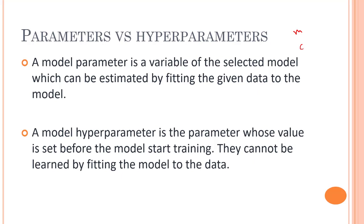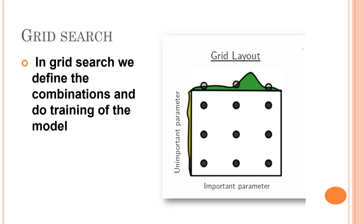Let's look into the different ways we can tune our hyperparameters. The first way is grid search. Grid search is one of the simplest algorithms for hyperparameter tuning. We divide the domain of hyperparameters into a discrete grid and try each and every combination of the values in the grid, calculating some performance metric using cross-validation. The point in the grid that maximizes the average cross-validation value is the optimal combination of hyperparameter values.